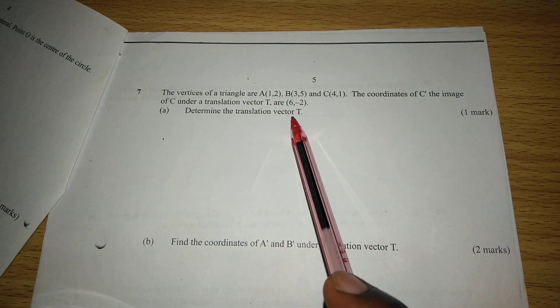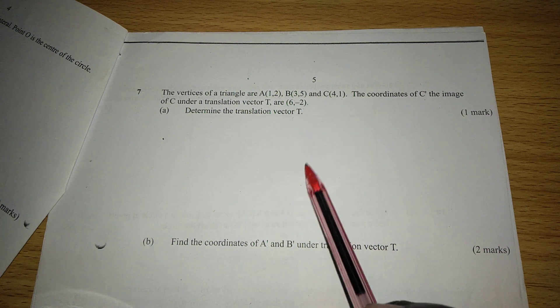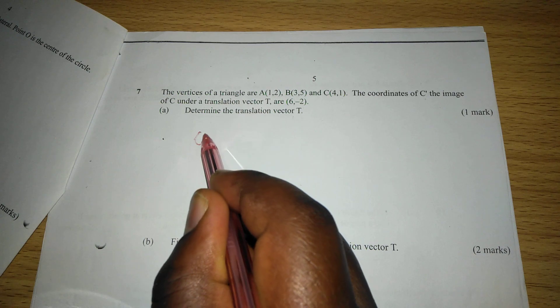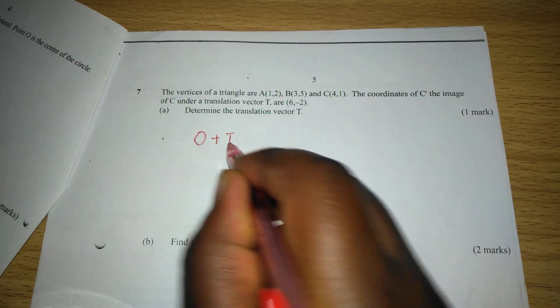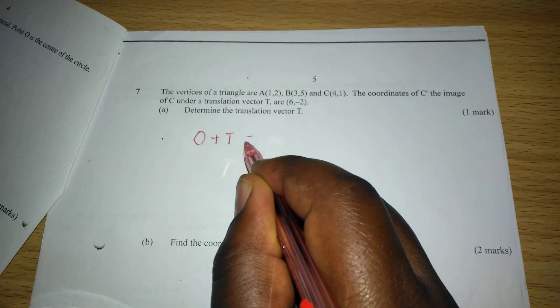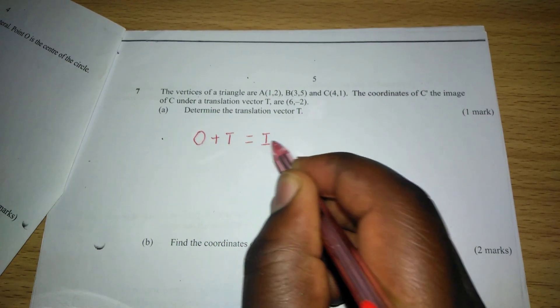We know very well that when we take the object and we add a translation vector T, we should always get the image of that object.